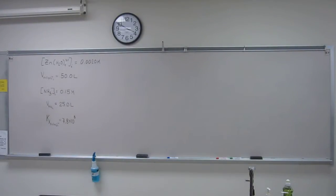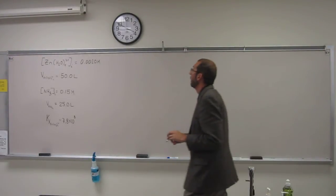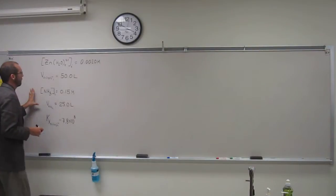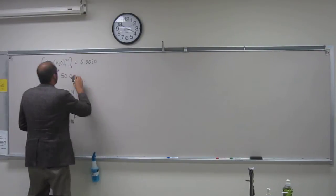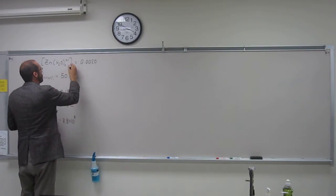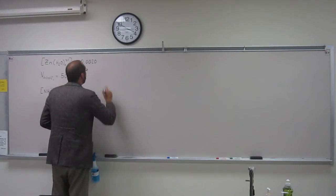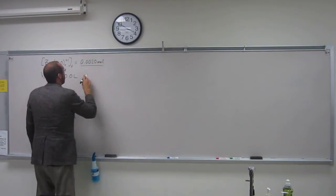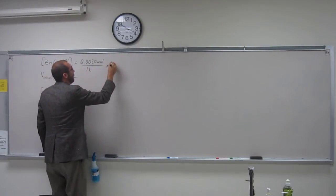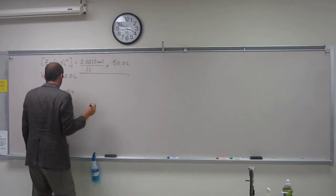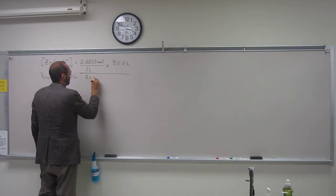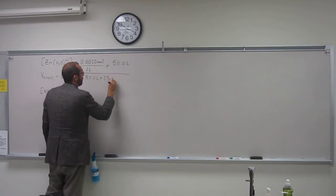That's a big equilibrium constant — different than what we've been used to seeing. So the first thing we're going to need to do is convert these two concentrations to their new molarities after mixing. So the final concentration is going to be moles per liter times 50.0 liters divided by 50.0 liters plus 25.0 liters.